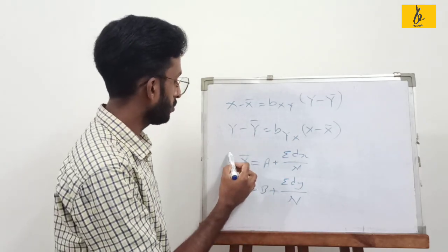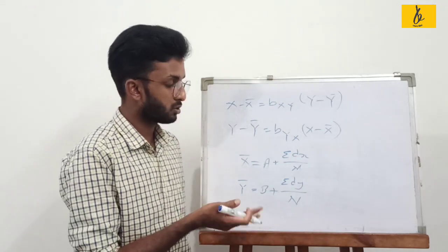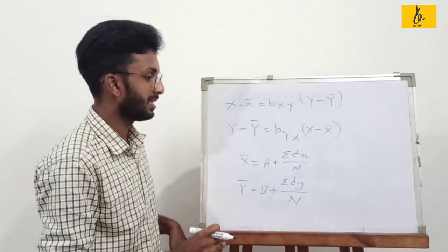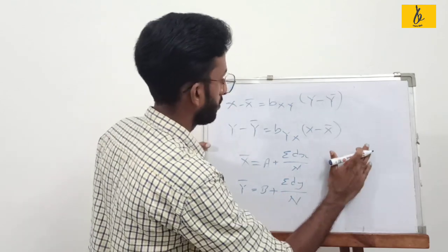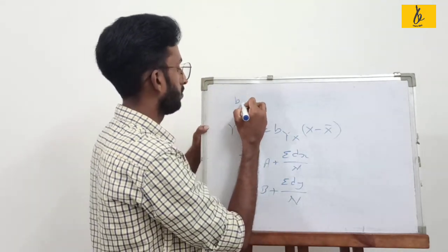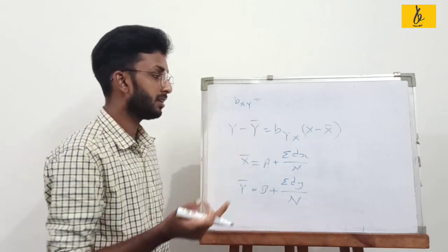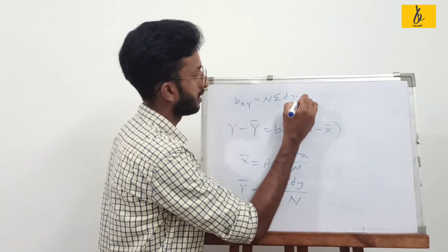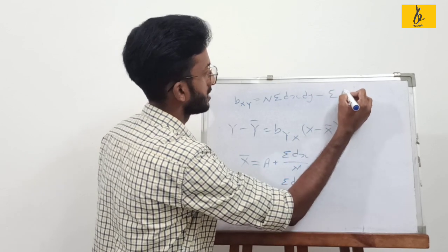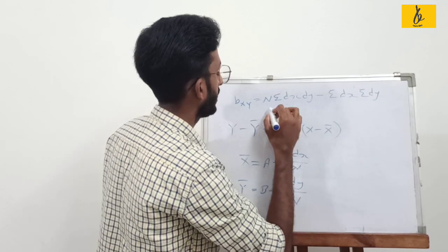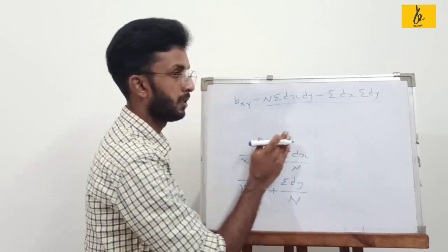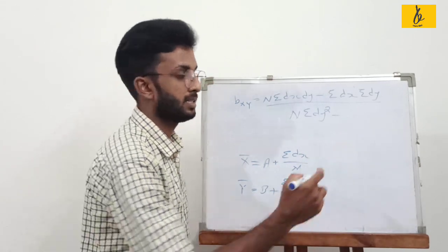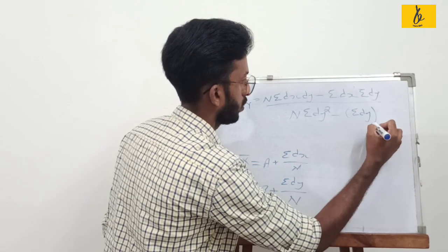Now we substitute these. The formula for bxy is: sigma dx dy minus sigma dx into sigma dy divided by n, all divided by sigma dy squared minus sigma dy whole squared divided by n.